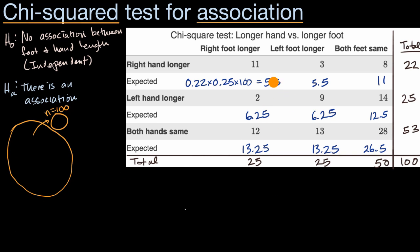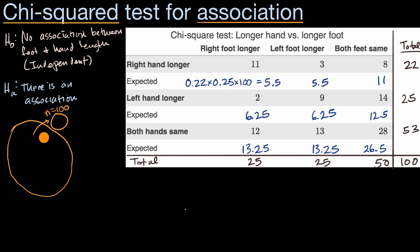Once you have all your expected values, that's a good time to test your conditions. The first condition is that you took a random sample — let's assume we did. The second is that the expected value for any data point must be at least 5. All of our expected values meet that criterion. Note that actual observed counts don't need to be 5 or more — it's okay that we observed a 2, because the expected value there is 5 or larger. The last condition is independence: either sampling with replacement, or the sample size is no more than 10% of the population.